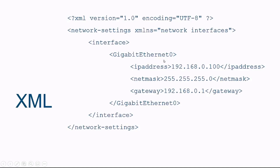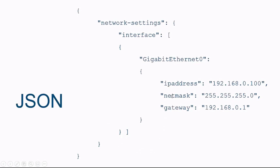These three objects are part of the Gigabit Ethernet Zero object, the Gigabit Ethernet Zero object is part of the Interface object, and the Interface object is part of the Network Settings object. The similar structure is seen in JSON, where the IP address, NetMask, and Gateway data objects are part of the Gigabit Ethernet Zero object, which is part of the Interface and the Network Settings. In this case, the Interface also has an array for the listing of additional interfaces. Notice how the structure here is defined by the curly braces and the commas.